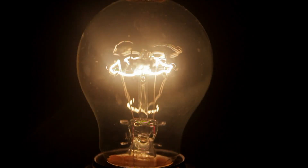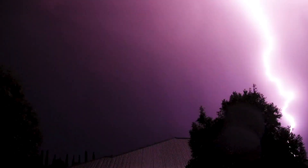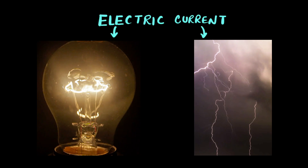Electricity that lights up a bulb looks very different than lightning strikes, but they're actually more similar than one might think because they both have electric current. So let's understand what electric current is, how they are produced, and also get to understand a little bit about lightning.